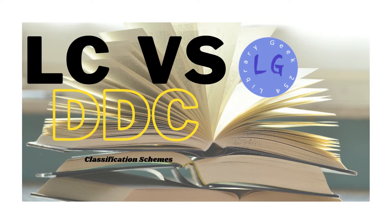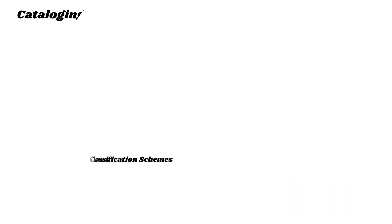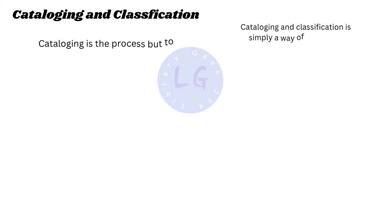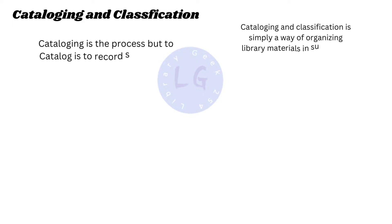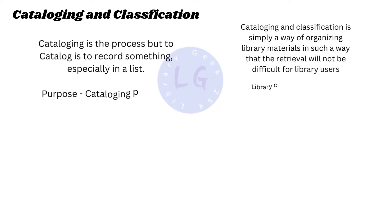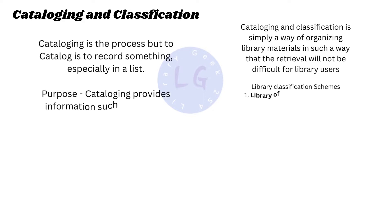Welcome to yet another video — Library Geek here. Today we're going to talk about LC and DDC as library classification schemes and the process of cataloging. Cataloging is the process of recording something, especially in a list — it's as simple as that in basic English.